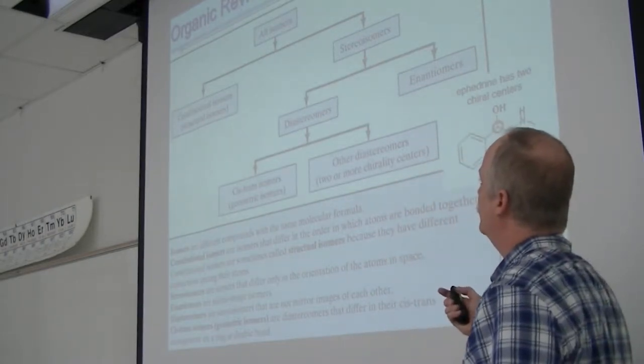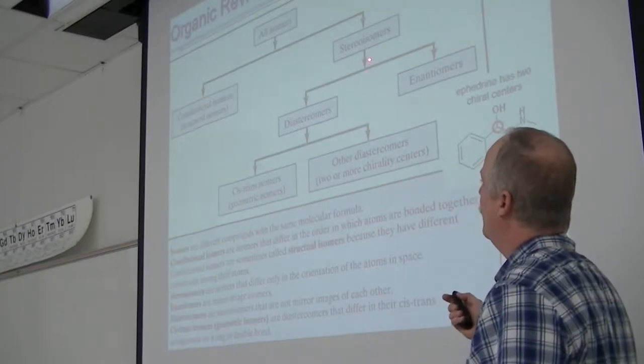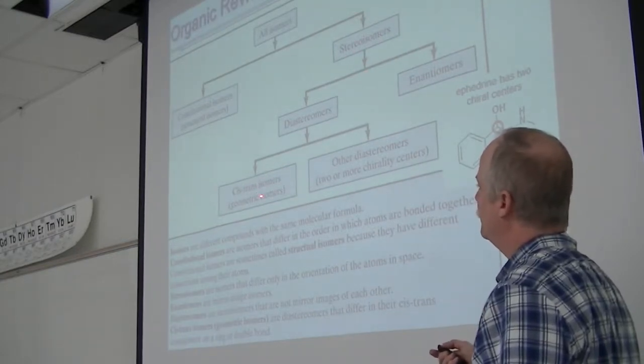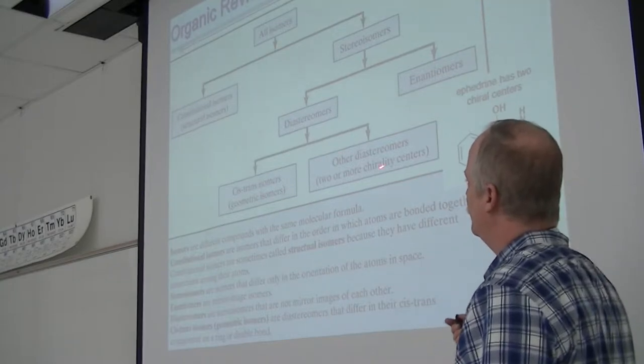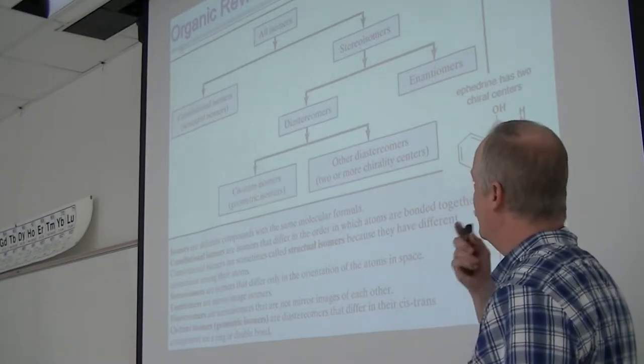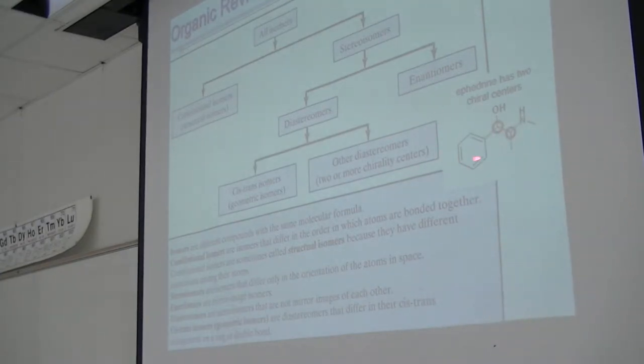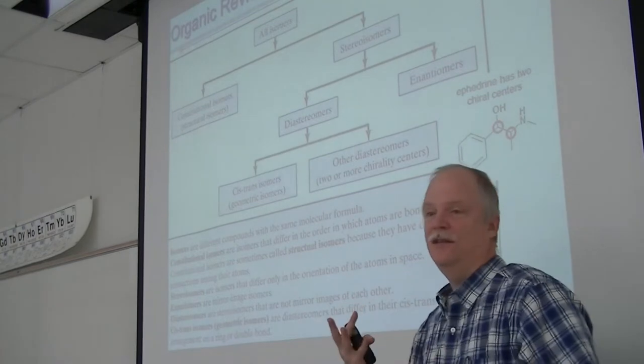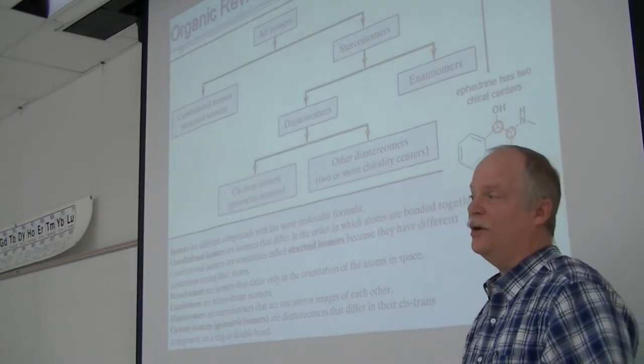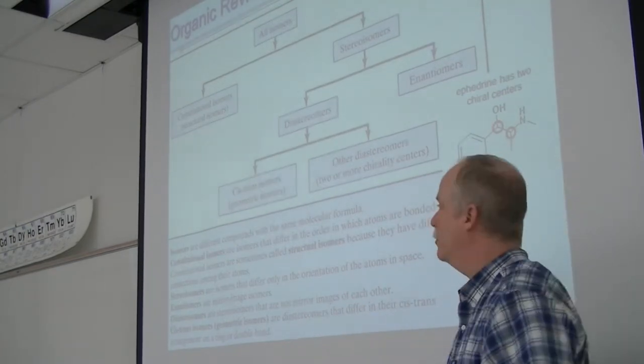Then you have stereoisomers, including diastereomers like cis-trans isomers and those with two or more chirality centers, and enantiomers. Here's ephedrine that has two chiral centers. Cocaine has four. These molecules can get pretty complex in their different forms.